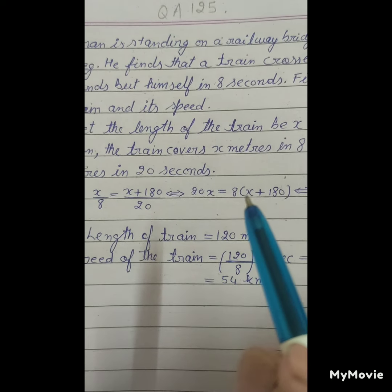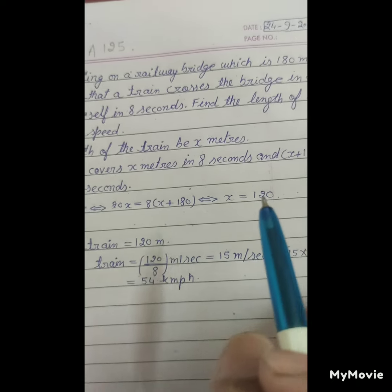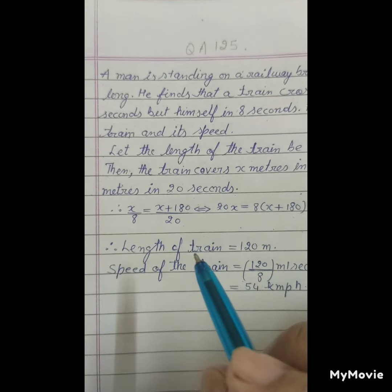This implies 20x equals 8 into x plus 180, which gives x equals 120. So the length of the train is 120 meters.